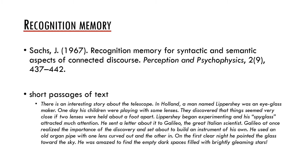They discovered that things seemed very close if two lenses were held about a foot apart. Lippershee began experimenting and his spyglass attracted much attention. He sent a letter about it to Galileo, the great Italian scientist. Galileo at once realized the importance of the discovery and set about to build an instrument of his own. He used an old organ pipe with one lens curved out and the other in. On the first clear night he pointed the glass towards the sky. He was amazed to find the empty dark spaces filled with brightly gleaming stars.